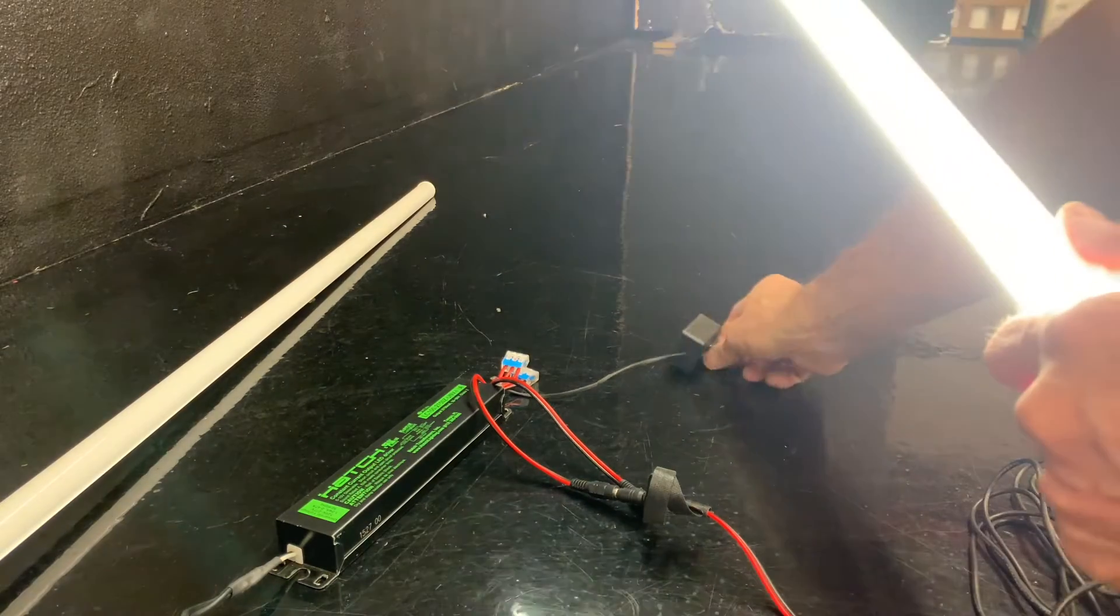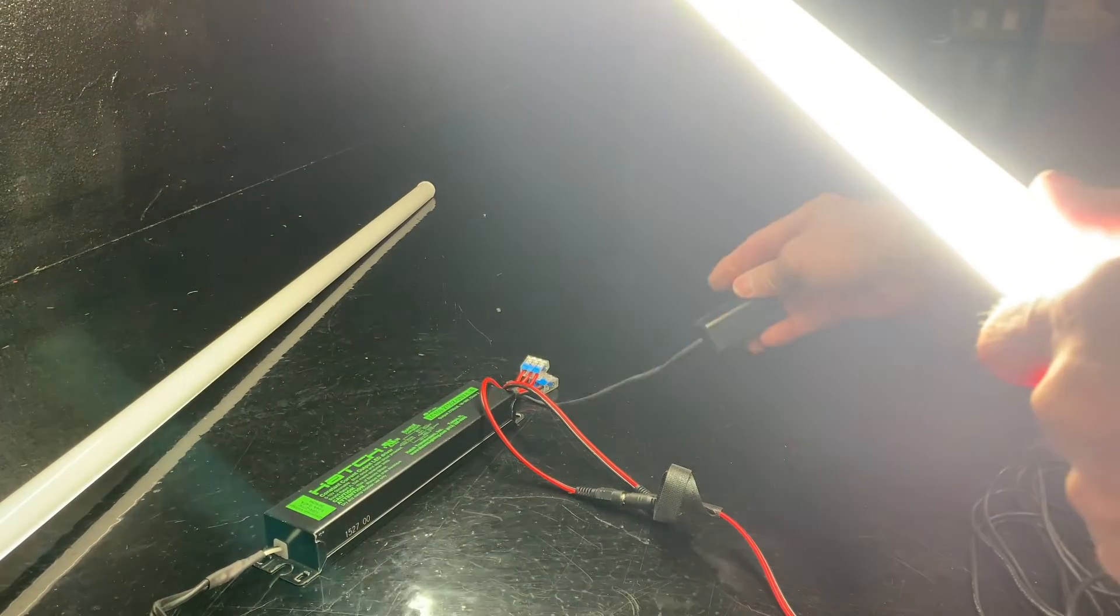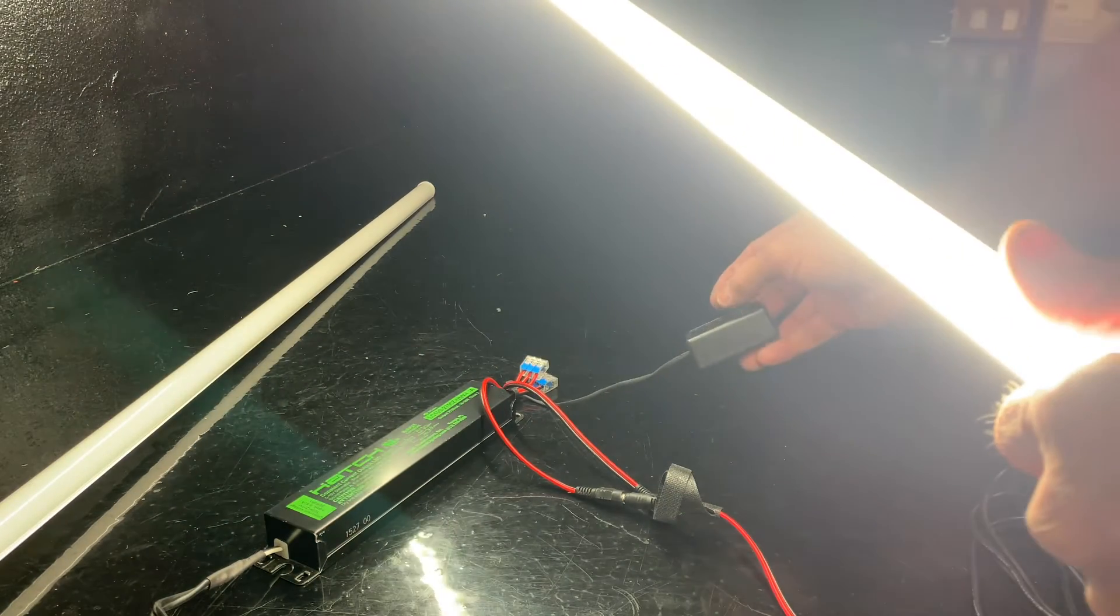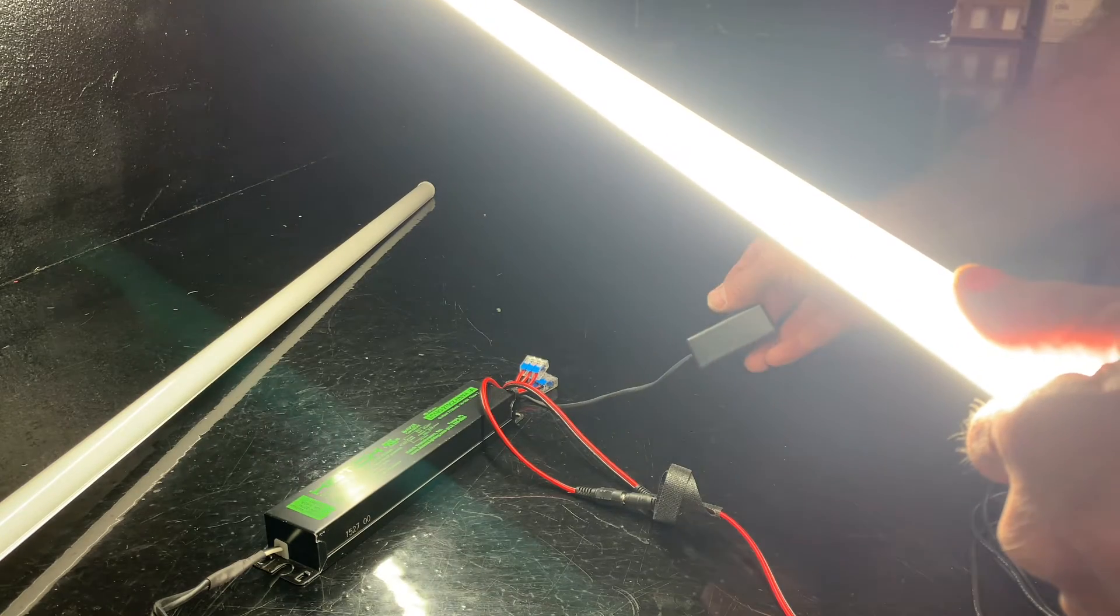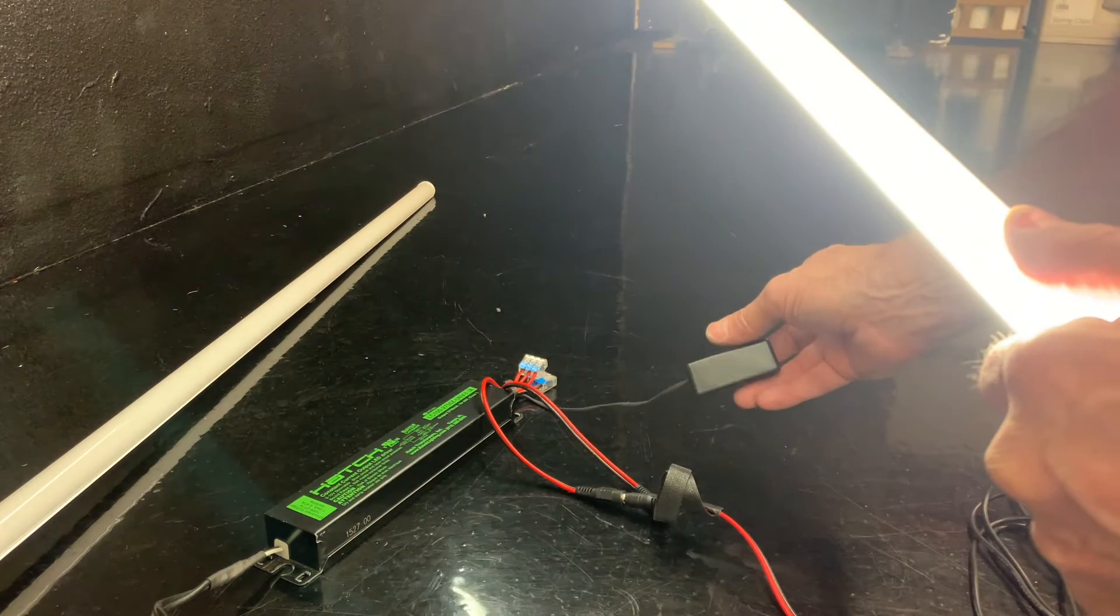And then you'll see as I adjust the brightness, it goes pretty bright. So two of these make a 10,000 lumen light fixture. That is the vertical lights that I brought in.